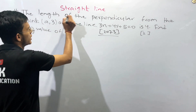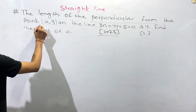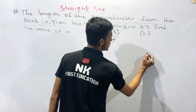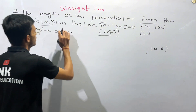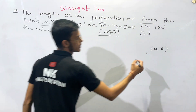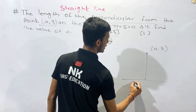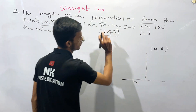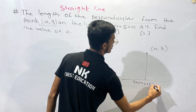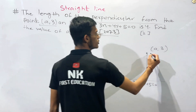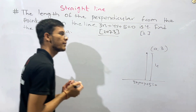The question from 2003 is: find the length of the perpendicular from the point A(3, ?) on the line with equation 3x + 4y + 5 = 0. We need to find the distance.